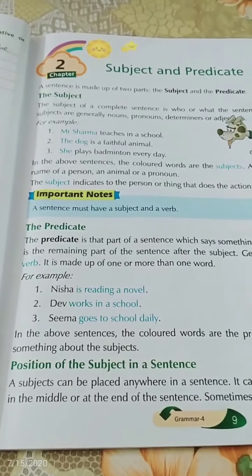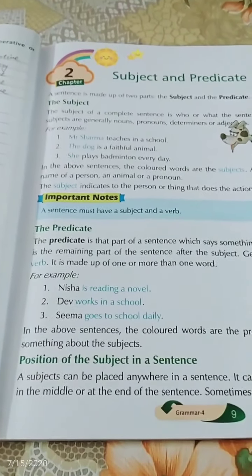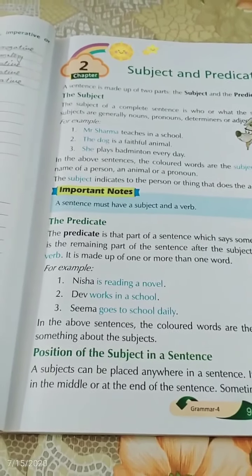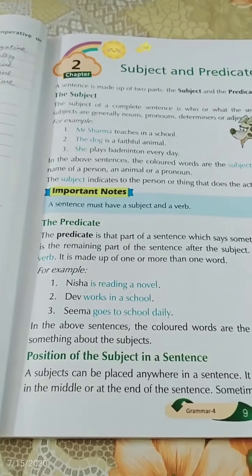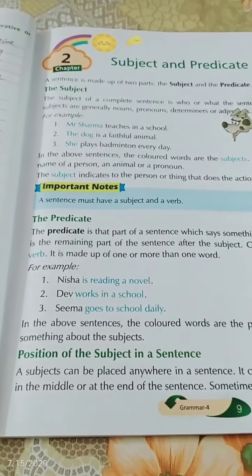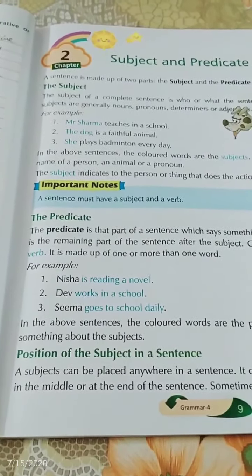Sometimes your teacher gives you a word like 'friendship' and you have to make a sentence. Then you might write 'My friend is Rahul.' Here Rahul is a name of a person, so Rahul is the subject — but the word Rahul is coming at the last. So we can add the subject anywhere in the sentence.